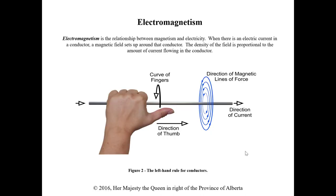Electromagnetism is where we actually create a magnet using electricity. When we have current flowing through a conductor, a magnetic field develops around that conductor. When we have a coil of wire, these fields amplify and create a larger magnet as we add more turns. There is a magnetic field that develops around every conductor — we discussed this with sheath currents as well. The left hand rule for conductors lets us determine the direction of the magnetic lines of force, or conversely find the direction of current.